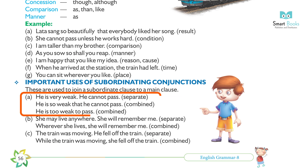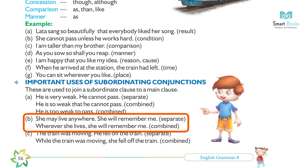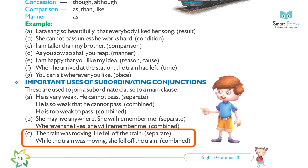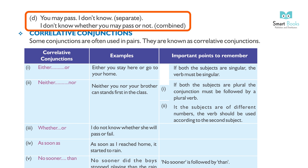(a) Separate: He is very weak, he cannot pass. Combined: He is so weak that he cannot pass. / He is too weak to pass. (b) Separate: She may leave anywhere, she will remember me. Combined: Wherever she leaves, she will remember me. (c) Separate: The train was moving, he fell off the train. Combined: While the train was moving, he fell off the train. (d) Separate: You may pass, I don't know. Combined: I don't know whether you may pass or not.